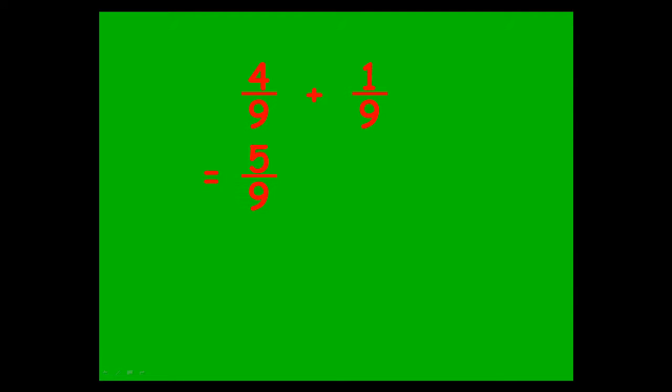So when we're talking about fifths, we end up with three fifths. Four ninths plus one ninth, you end up with five ninths. Seven eighths minus four eighths, you end up with three eighths.